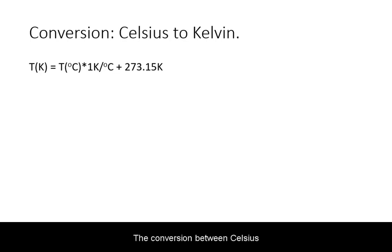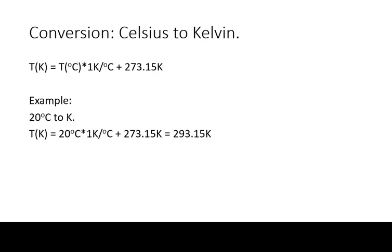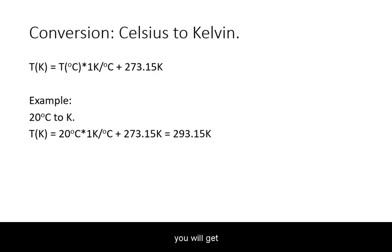The conversion between Celsius and Kelvin is a lot simpler. Because the scaling factor between the two scales is 1 Kelvin for every Celsius degree, you just need to add the offset of 273.15 Kelvin. If you try this out on the example of typical room temperature of 20 degrees Celsius, you will get 293.15 Kelvin.